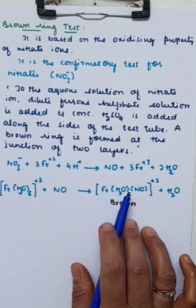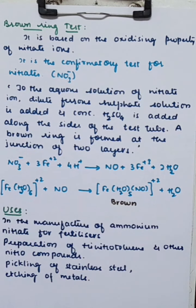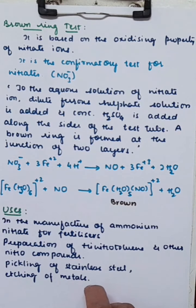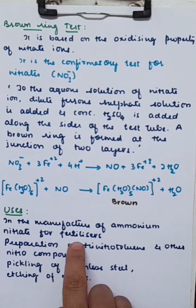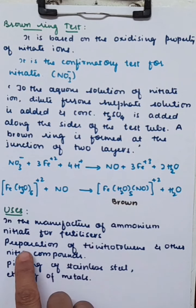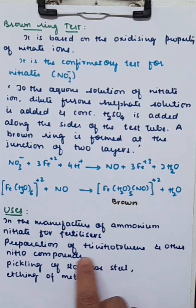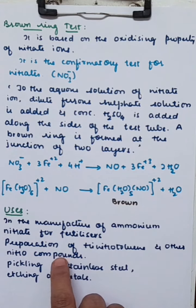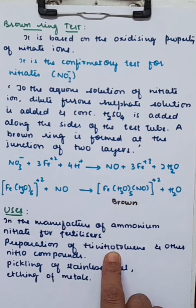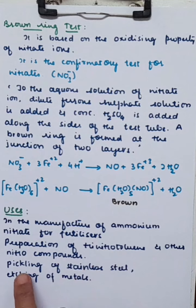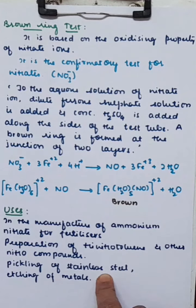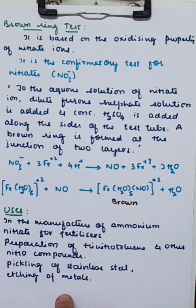The uses of nitric acid: it is used in the manufacture of ammonium nitrate, which is used as a fertilizer. It is used in the preparation of trinitrotoluene (TNT) and other nitro compounds — it acts as a nitrating agent to introduce a nitro group, for example in the preparation of trinitrotoluene and trinitroglycerin. It is also used in pickling of stainless steel to clean steel surfaces, and in etching of metals to make designs. Thank you.